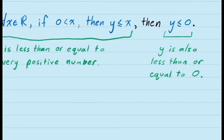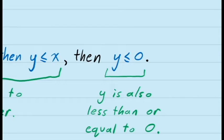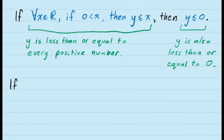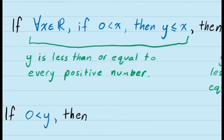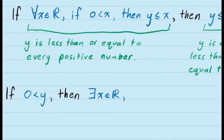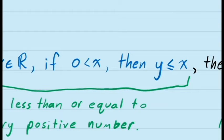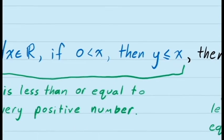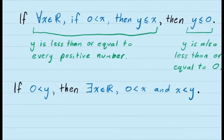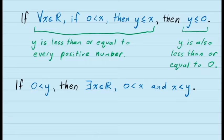Let's try to write down the contrapositive form of this complicated conditional statement. The contrapositive says: if the consequent is false — the negation of the consequent — then the antecedent is false. The negation of the consequent is simple: since the consequent is that y is less than or equal to 0, its negation is that y is greater than 0. The negation of the antecedent is more complex. The antecedent reads: for all x in the real numbers, if x is greater than 0, then y is less than or equal to x. Its negation is: there is at least one value of x for which the conditional is false — that is, x is greater than 0 and y is greater than x. In this form, it seems a little more reasonable to prove.